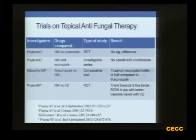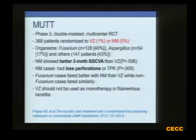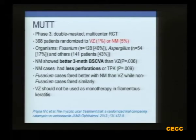In various randomized controlled trials whenever natamycin was compared to econazole, itraconazole, or voriconazole, natamycin was found to be superior. This included the Mycotic Ulcer Treatment Trial done at Aravind Eye Hospital, where voriconazole and natamycin were compared as primary therapy. However, Fusarium cases were much more common in that series at 40% versus Aspergillus at 17%, and we know Fusarium does not respond to voriconazole as well. If this study were done in North India, the results may be reversed since Aspergillus is more common there.